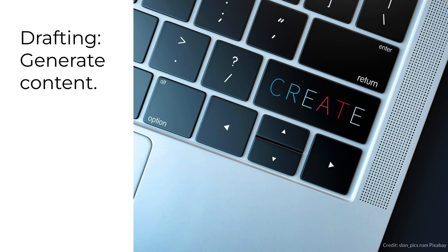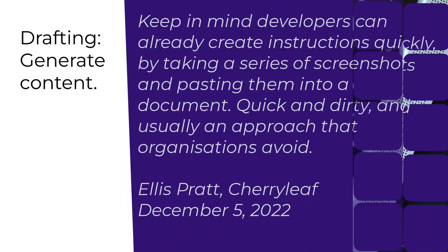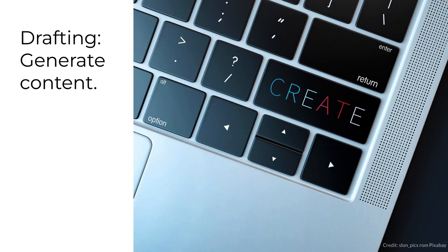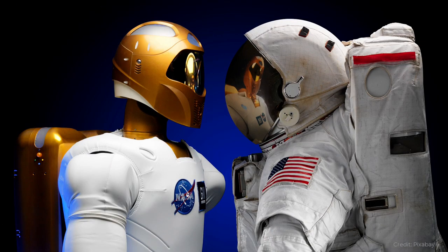In December of 2022, here's the conclusion Ellis Pratt wrote about in a blog post included in your instructional materials for this module. Keep in mind developers can already create instructions quickly by taking a series of screenshots and pasting them into a document — quick and dirty, and usually an approach organizations avoid because the quality isn't very good. The fact that you can use AI to generate text quickly is not by itself enough of a driver to start using it. He said the documentation ChatGPT created was a little wordy and would probably need some human or additional AI intervention. He concludes that ChatGPT could be a time-saving tool for technical authors rather than a threat to their career.